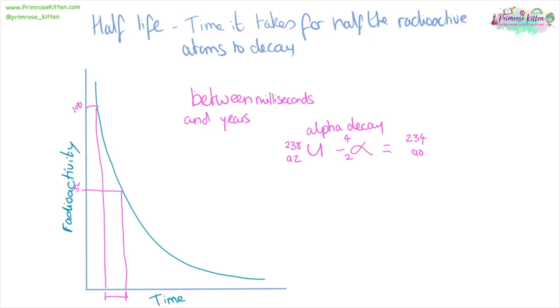For beta decay we have beta 0 minus 1. 238 minus 0 gives us 238. 92 minus minus 1 gives us 93, which gives us neptunium. It does not matter about the mass number for these calculations, the atomic number is the important thing.